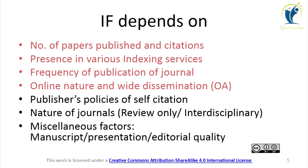Open access journals are accessible by all readers and researchers freely, so more readers and researchers cite the papers, hence improving the impact factor. Another factor is publishers' policies on self-citation — in some cases, publishers impose on authors the condition of citing a few of their own journal's papers, which increases citations. Additionally, the nature of the journal matters: review-only and interdisciplinary journals attract more readers and researchers, increasing chances of citations and improving the impact factor.